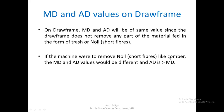On a machine like the Comber, short fibers — technically called noil — are removed during the process. Even if you set a particular mechanical draft using gears, the actual draft calculated from the kilotex values of input and output material will not match, because noil has been removed and the output material is thinner than expected. In this case, actual draft will always be greater than mechanical draft.